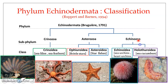The subphylum Echinozoa includes two classes: Echinoidea and Holothuroidea. The class Echinoidea includes sea urchins, heart urchins, cake urchins, and sand dollars. The Holothuroidea includes sea cucumbers, which are almost cylindrical echinoderms. These are the five classes that include living echinoderms.